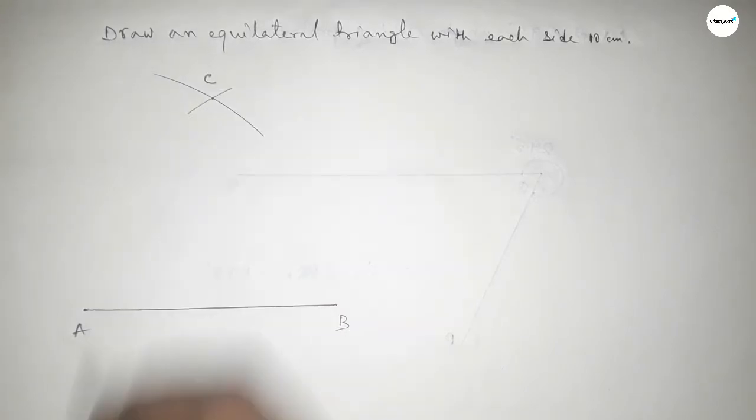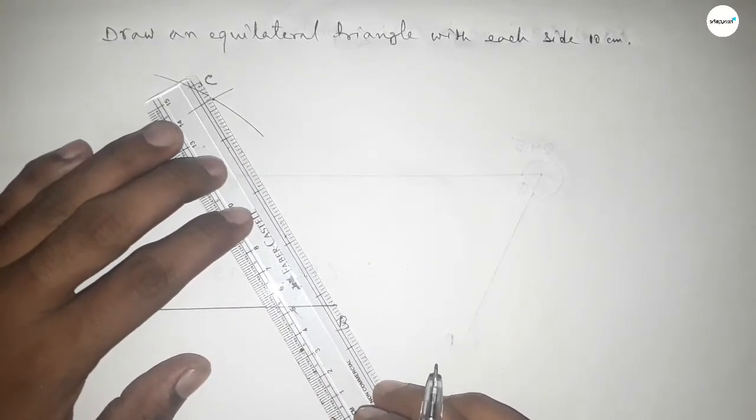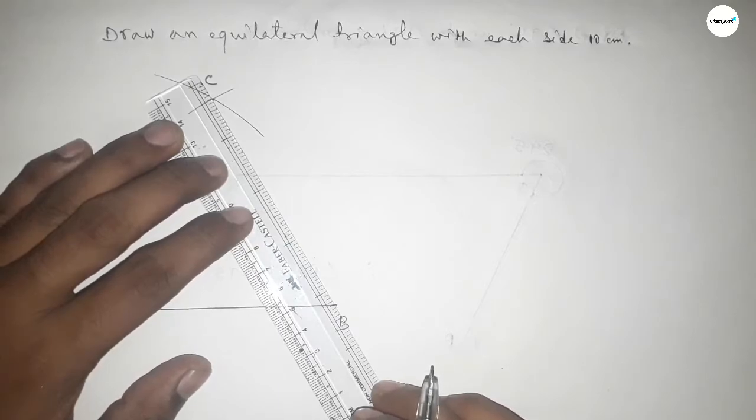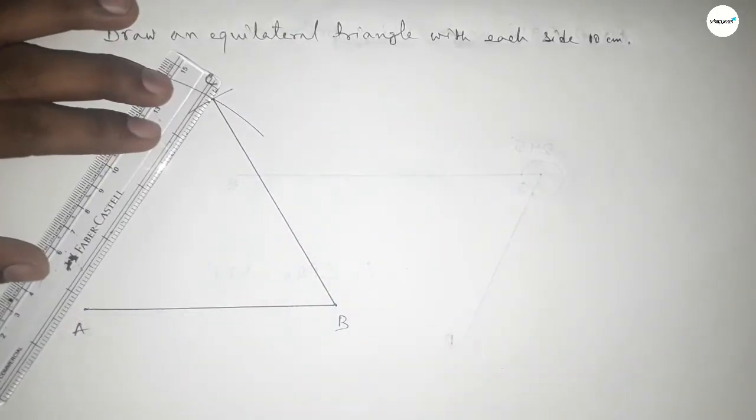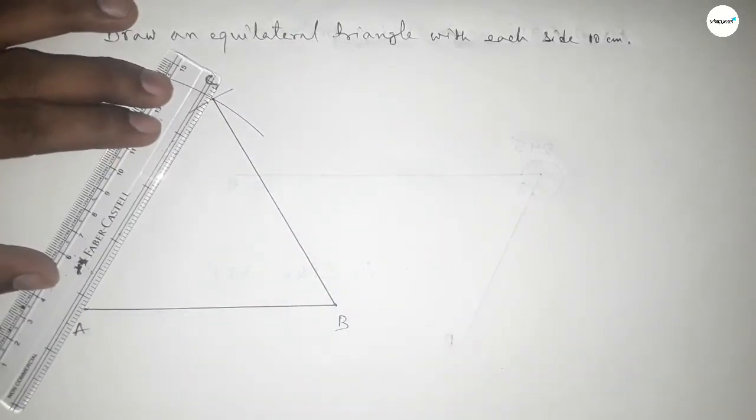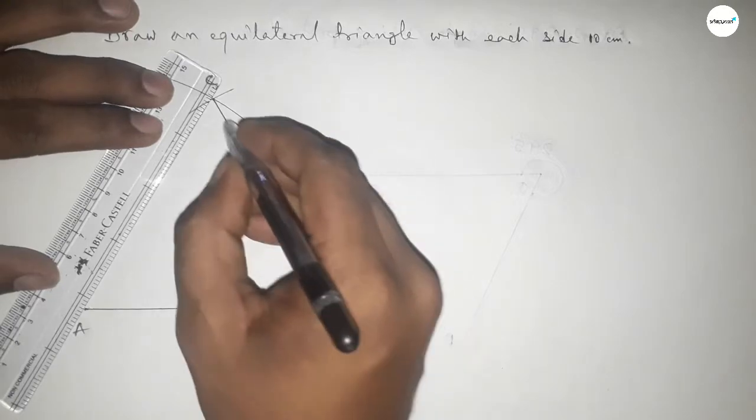And this is C point. Now joining this side and joining this side to get an equilateral triangle with each side 10 centimeter.